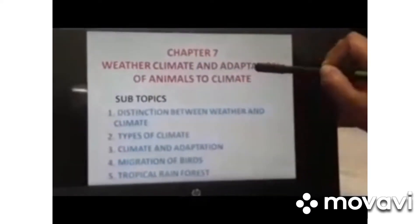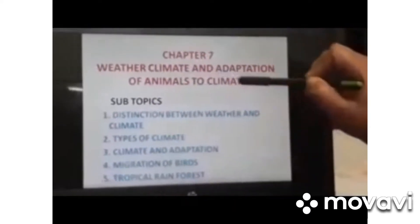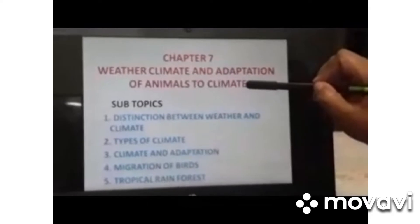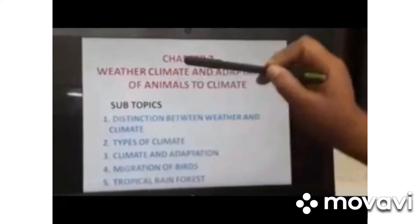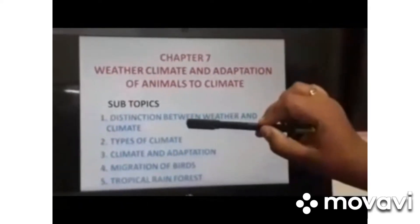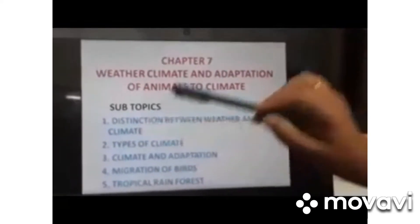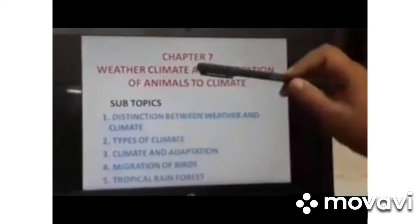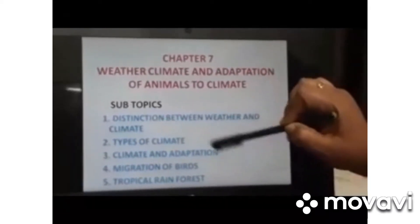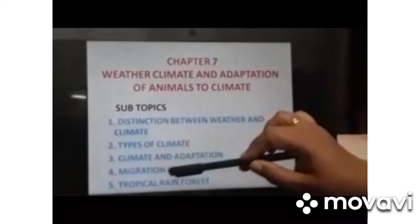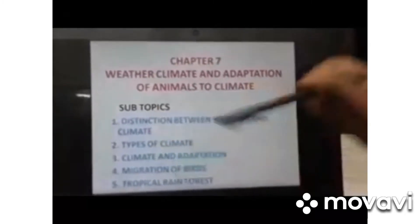Chapter 7 is Weather, Climate and Adaptation of Animals to Climate. The subtopics are Distinction between Weather and Climate, Types of Climate, Climate and Adaptation, Migration of Birds, and Tropical Rainforest.